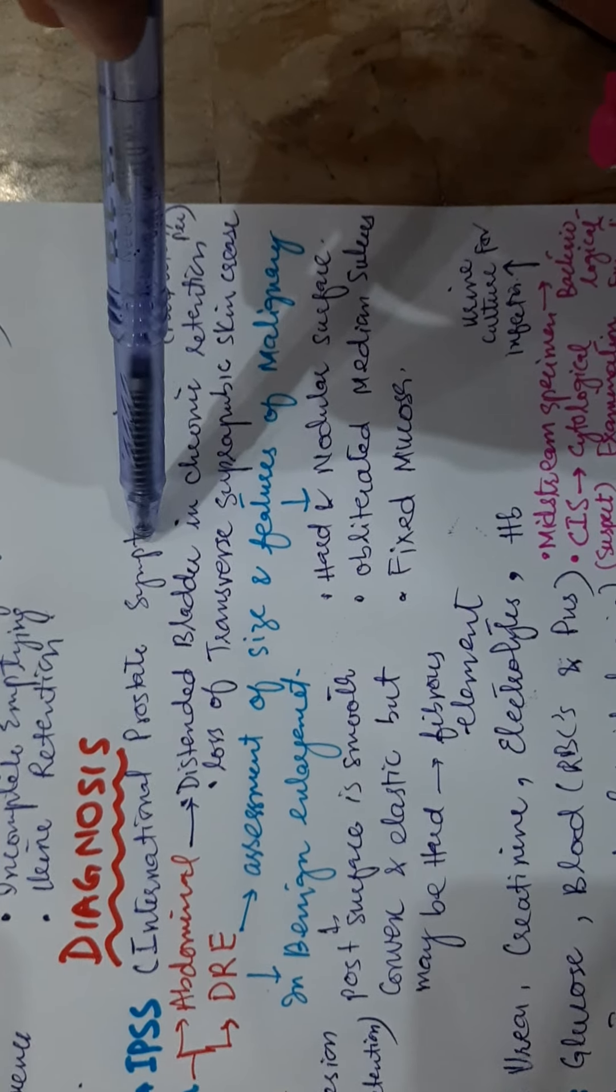Prostate-specific antigen: its serum value normally is less than 4 ng per ml. If it is 4 to 10 ng per ml, it shows infection. If it is more than 20 ng per ml, then it shows prostatic carcinoma suspicion. Increased PSA necessitates transurethral ultrasound scanning and transrectal ultrasonography-guided needle biopsy for the prostate to exclude any carcinoma or malignancy.